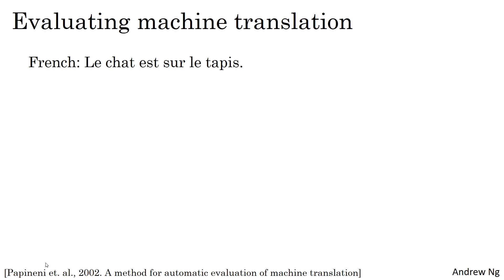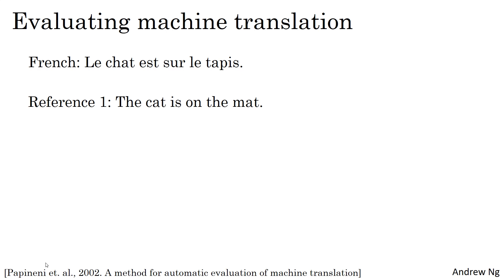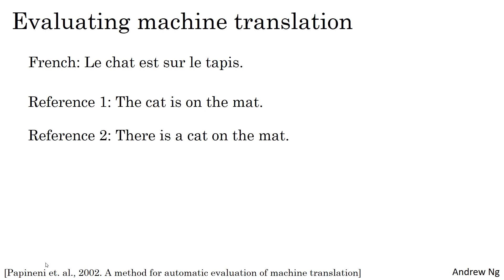Let's say you are given a French sentence, 'le chat est sur le tapis,' and you are given a reference human-generated translation of this, which is 'the cat is on the mat.' But there are multiple pretty good translations. A different person might translate it as 'there is a cat on the mat.' Both of these are perfectly fine translations of the French sentence.